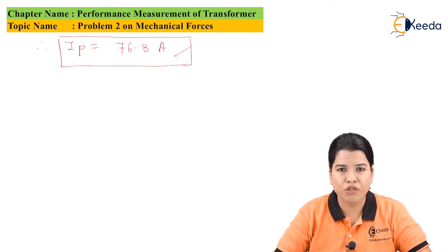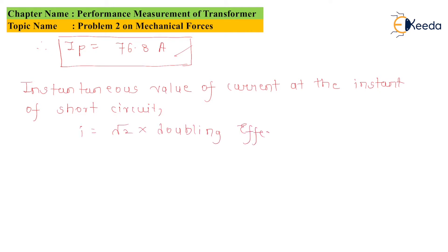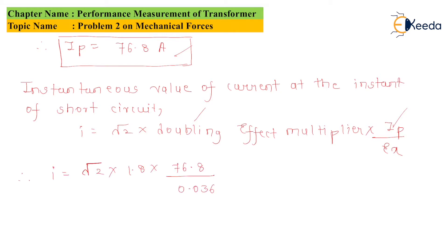Now let us find the value of the instantaneous current at the instant of short circuit. The formula is: I = √2 × doubling effect multiplier × Ip / Ex. Substituting the values: I = √2 × 1.8 × 76.8 / 0.036. After solving, we get the value of I.